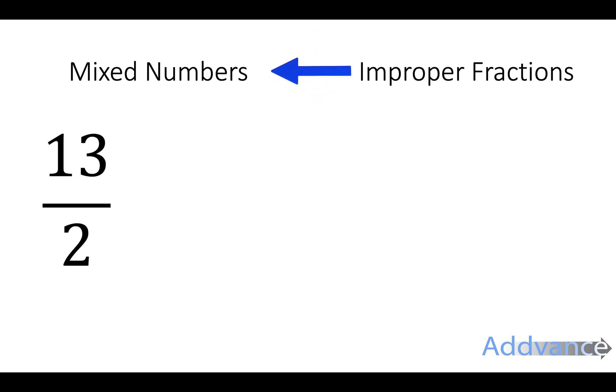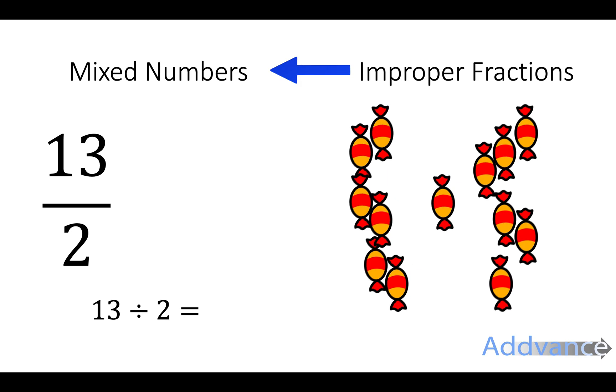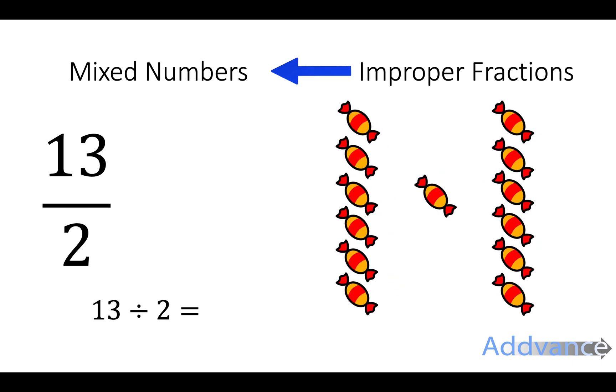Now let's go the other way, improper fractions to mixed numbers. 13 halves. For this we do the top number divided by the bottom number. 13 divided by 2 is 6 remainder 1.